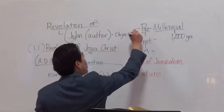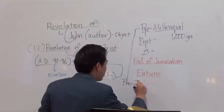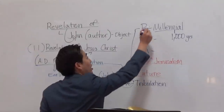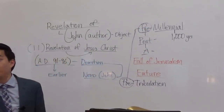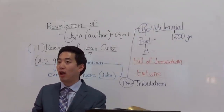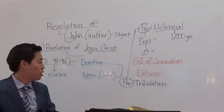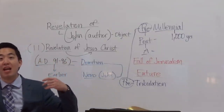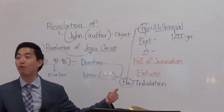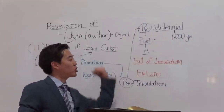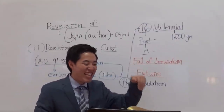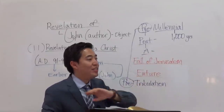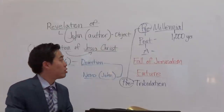Pre-millennial will also bring a pre-tribulation point of view. Before the tribulation, we believe Jesus Christ will rapture his church. It's not us — it's Jesus Christ. Post-tribulation believers think about going through the tribulation and resisting the Antichrist system — everything is man-made, man-effort. But we believe Jesus Christ is going to come before the tribulation and rapture us. Then he's going to set up his own kingdom. Pre-millennial means before the 1,000-year reign — Jesus Christ is going to come down, wipe out the Antichrist system, and set up his kingdom.